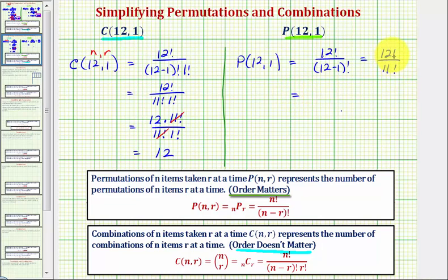And now we'll simplify by beginning to expand 12 factorial. So we'll write 12 factorial as 12 times 11 factorial, divided by 11 factorial, and once again, this simplifies to 1, leaving us with 12 permutations.